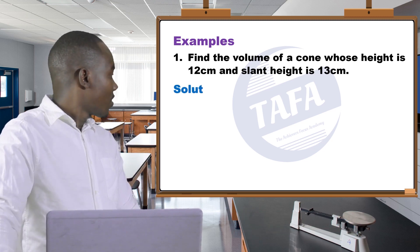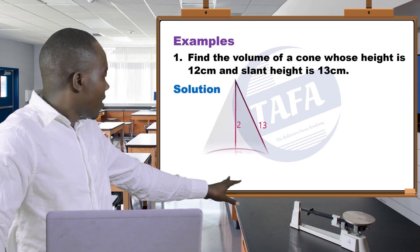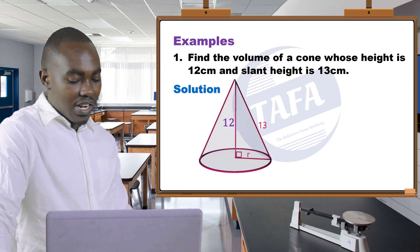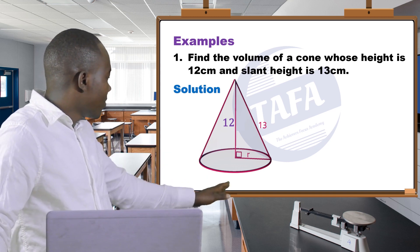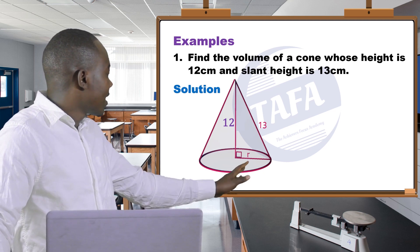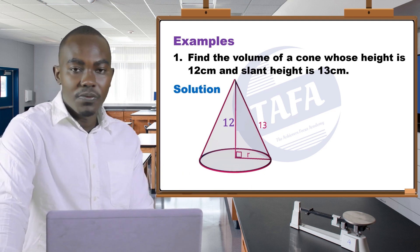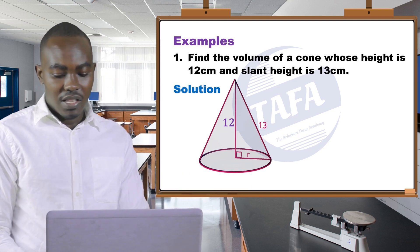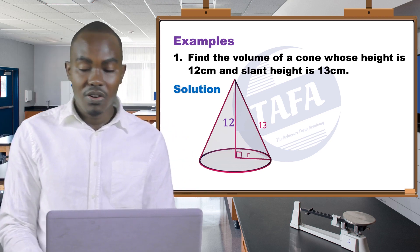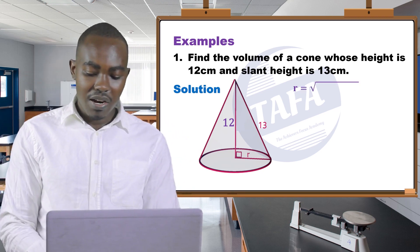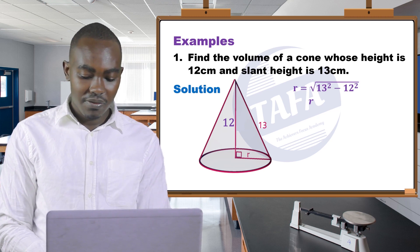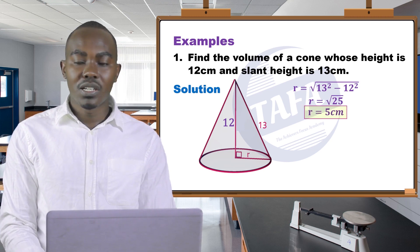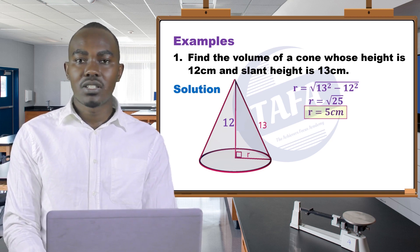So we draw the cone and represent it on a diagram. You're given the vertical height is 12 centimeters, the slant height is 13 centimeters. So we find the radius, that is by Pythagoras theorem. So radius is equal to the square root of 13 squared minus 12 squared, which is 25.